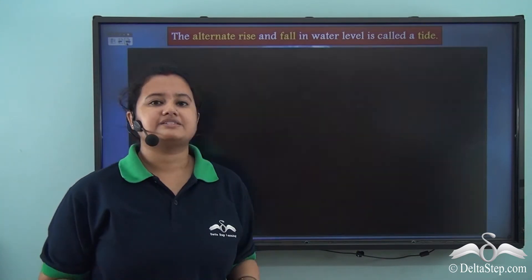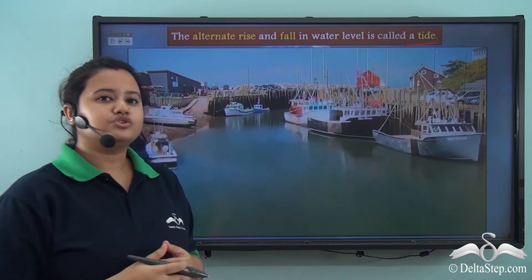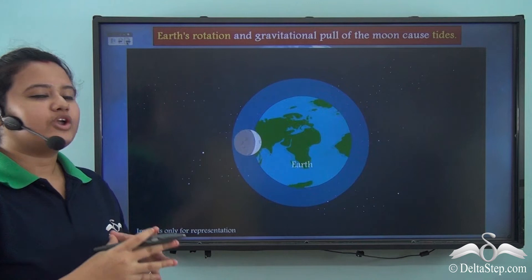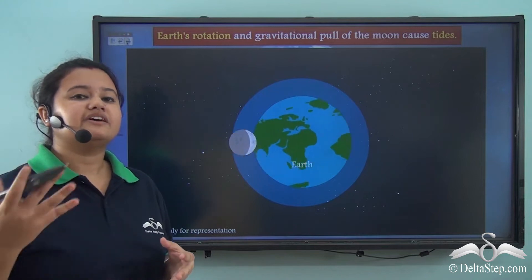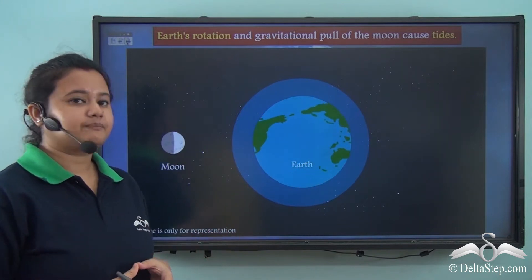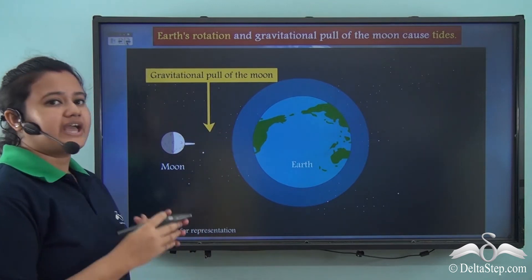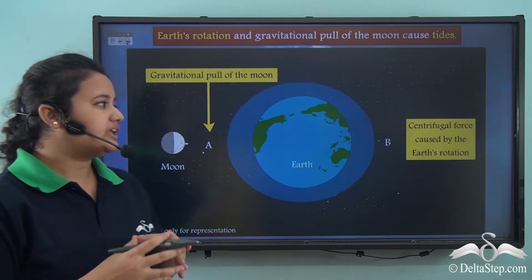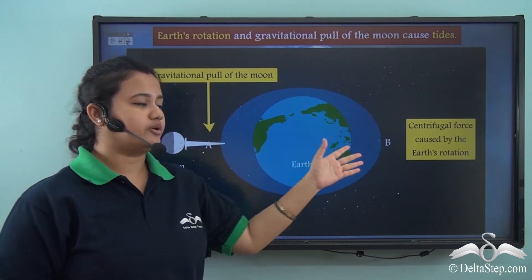Now this alternate rise and fall in the level of water is known as a tide. The moon revolves around the earth, and during this movement the gravity of the moon attracts the water bodies present on the earth's surface. So the part of the earth facing the moon — that is, point A — experiences an increase in water level, known as high tide. We can also see another high tide at point B, that is the side of the earth which is far away from the moon.